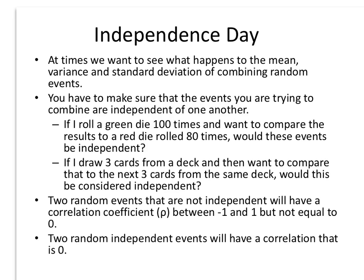When we start looking at combining random events and calculating the mean, variance, and standard deviation of these combined events, it's important that we show that the events are independent of one another. Independent meaning that the probability of one happening does not affect the probability of the other event happening. The easiest way to show that is that the probabilities are equal, no matter which one happens first.